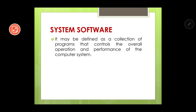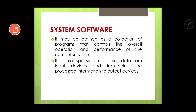A collection of programs means there will be more than one program, and its main work is to control the overall operation and performance of the computer system. The basic purpose of system software is to see the overall performance of the computer — it is basically associated with maintenance work. It is also responsible for reading data from input devices and transferring the processed information to the output devices, meaning it handles the flow from input to the CPU and back to the output device.